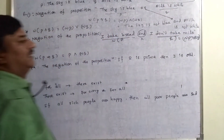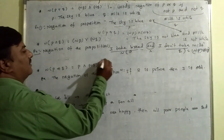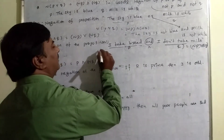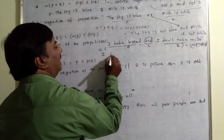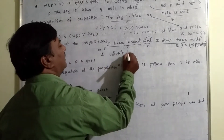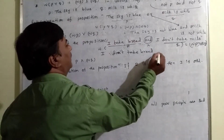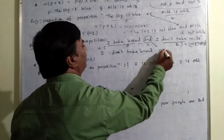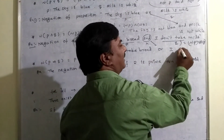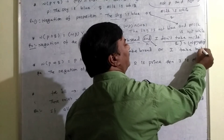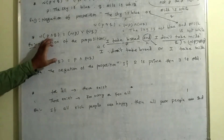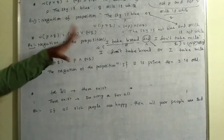Negation of P or negation of Q: we can write the complete statement as — negation of P, where P is 'I take bread', gives 'I don't take bread'; and 'and' becomes 'or'; and negation of Q, where Q is 'I don't take milk', gives 'I take milk.' So the answer is: 'I don't take bread or I take milk.' This is the example for negation of P and Q equals negation of P or negation of Q.